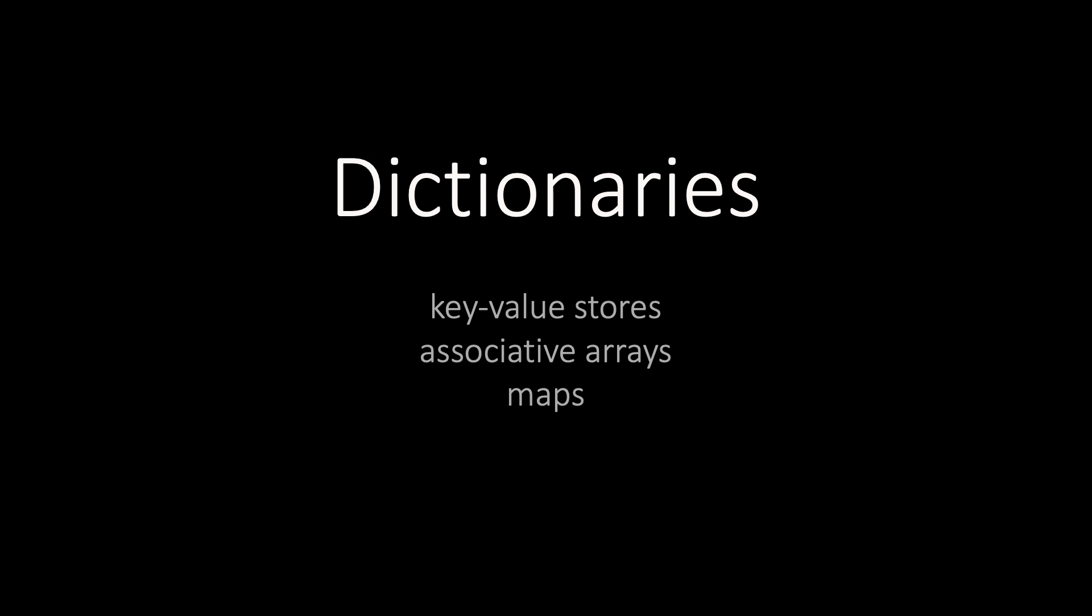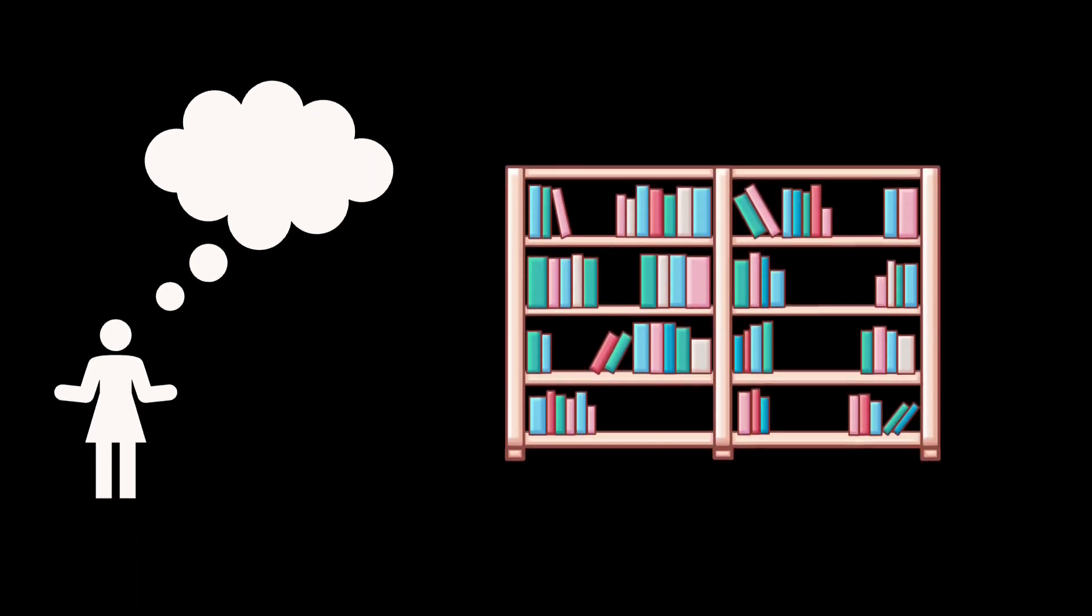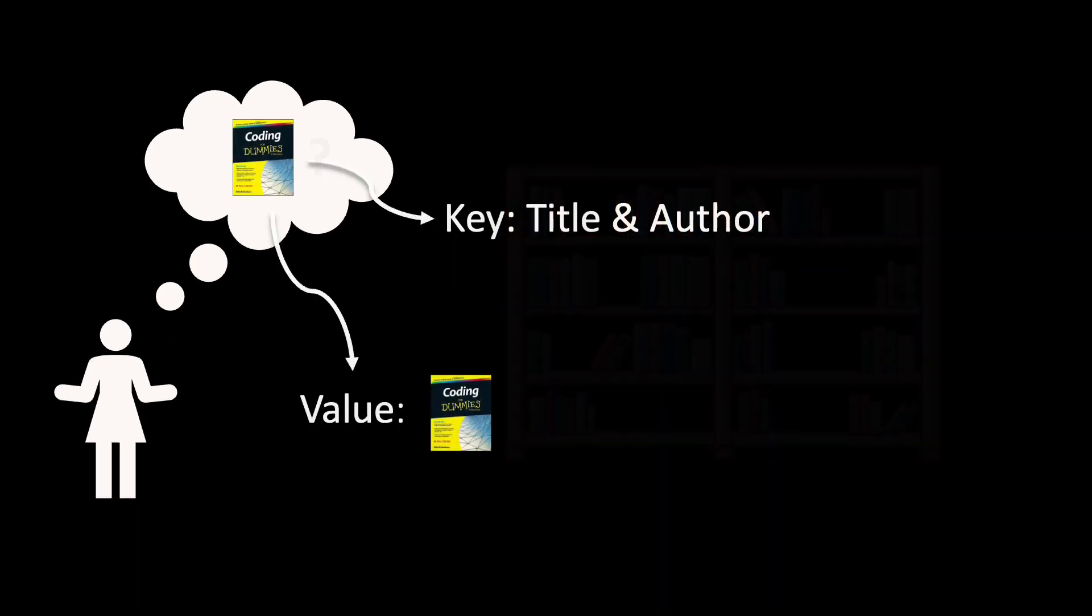But what is a dictionary, and how can we implement one? An intuitive real-life example of a dictionary is a library. If you want to read a certain book and you know the book's title and author or the ISBN, you can search for the book in the library.